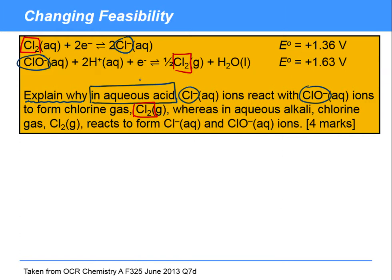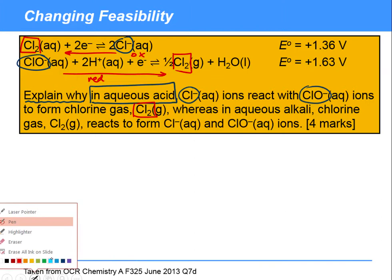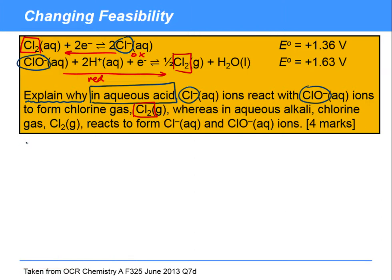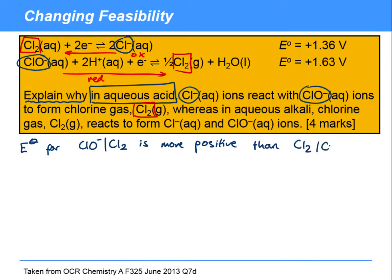In this case, the Cl⁻ is forming Cl₂, so we've got oxidation here. And in this case, the ClO⁻ is forming Cl₂, which is reduction. So we're always going to need to bring it back to the redox equilibria that are involved. So explain why that's happening. First thing we do: let's look at the standard electrode potentials, and we find that E° for ClO⁻/Cl₂ is more positive than Cl₂/Cl⁻.